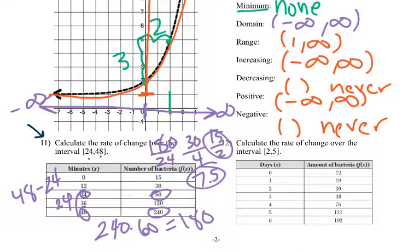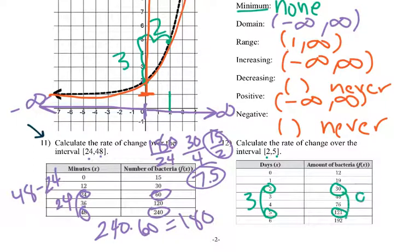Number 12 — we go 2 to 5. So 5 minus 2 gives us a difference of 3. Then 121 minus 30 gives us a difference of 91. So we'd have 91 over 3, which I don't think we can reduce further.